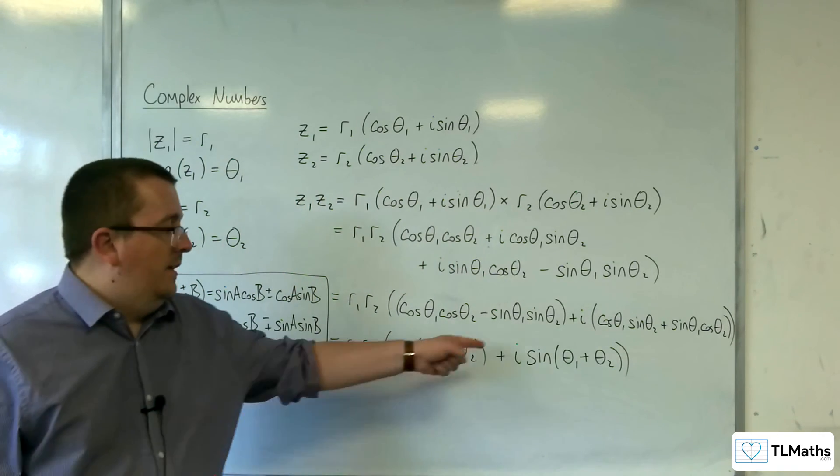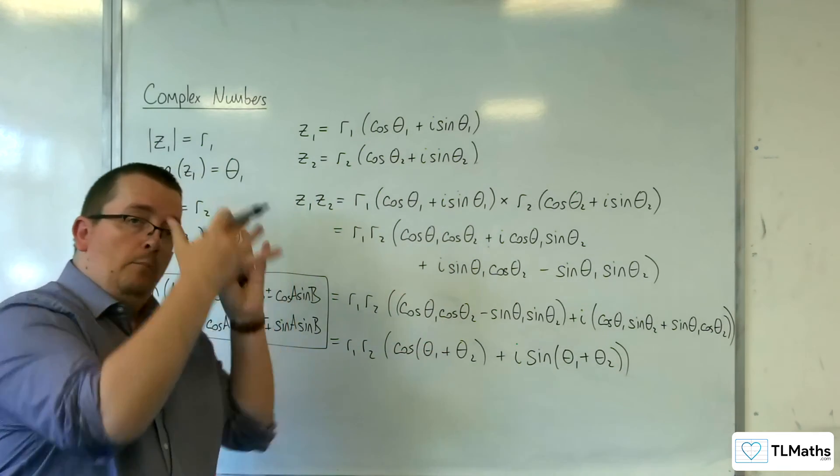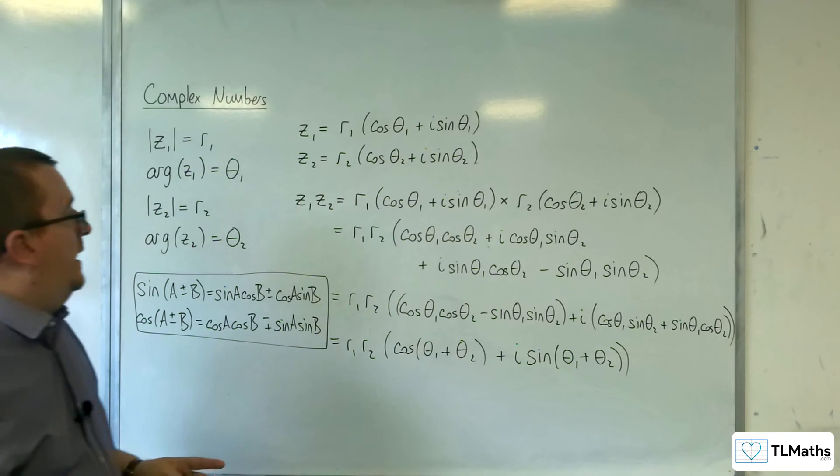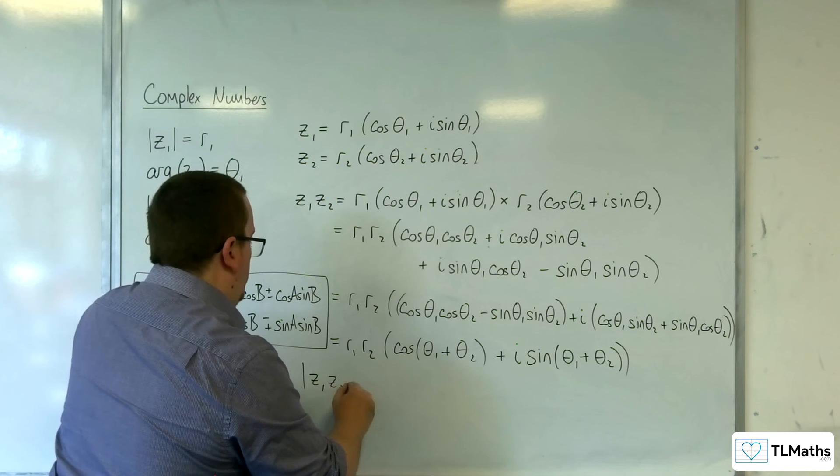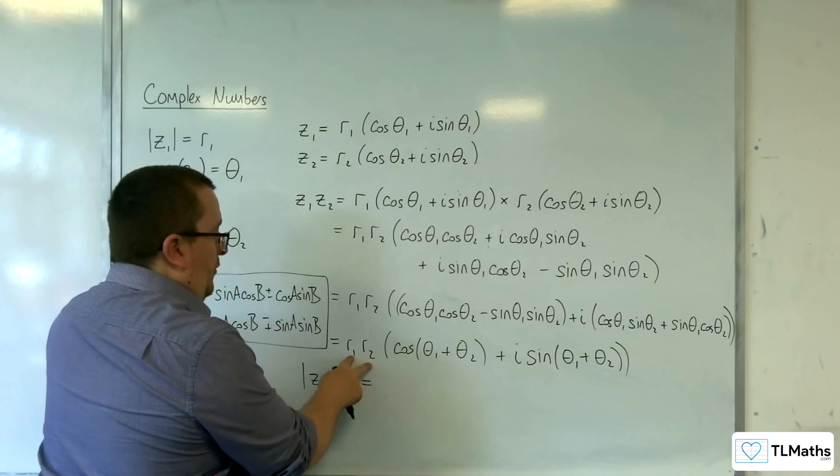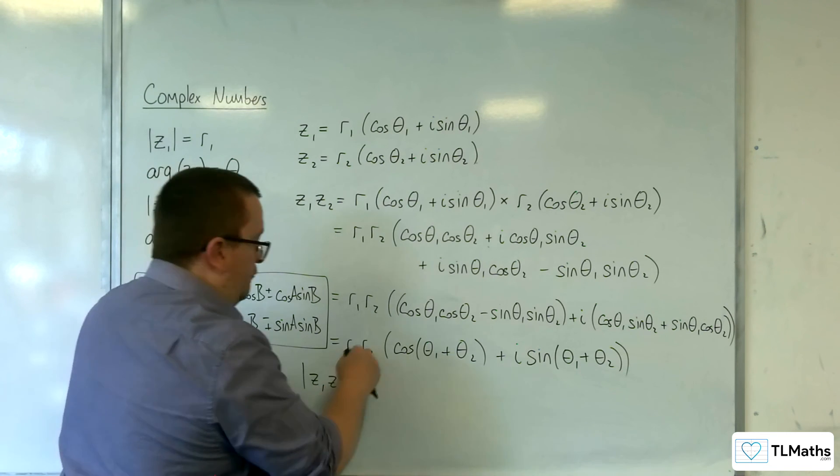And now it's in modulus argument form, where you can then say, well, the modulus of Z1 Z2 has got to be the R1 R2, what's out in front.